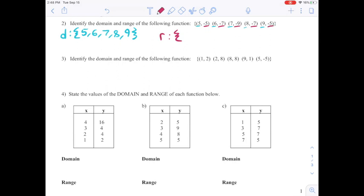Then -5, which also happens twice, so I'll cross off both of those. And there's my answer, my domain and my range.